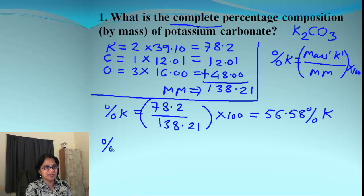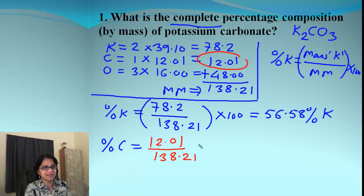Let's do the next one. Percent carbon. And that will be the total mass which we have because of carbon, which is 12.01 divided by the molar mass which is 138.21 and that times 100. And that is 8.69% of carbon we got.